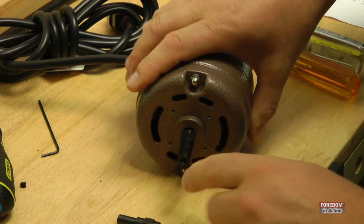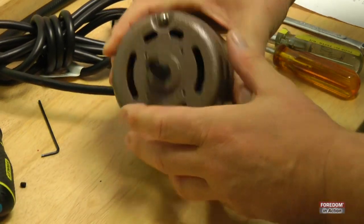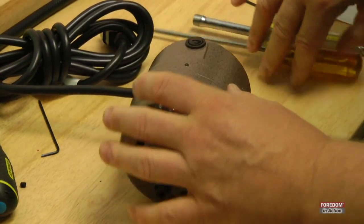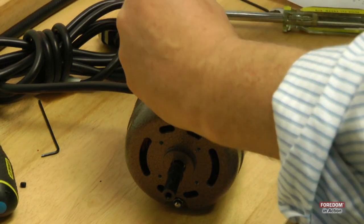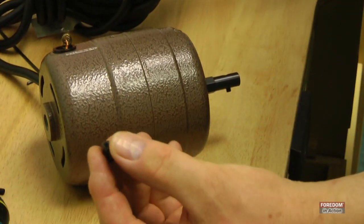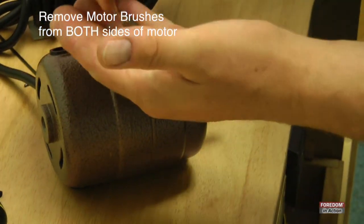Once your shaft is off, now what you need to do is remove the motor brushes. That's your motor brush cap, and that's your motor brush.